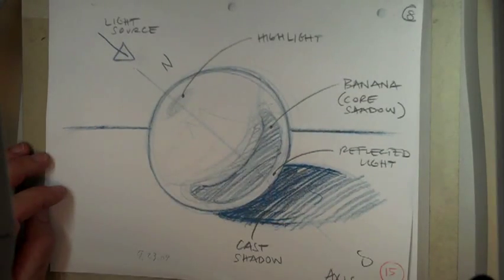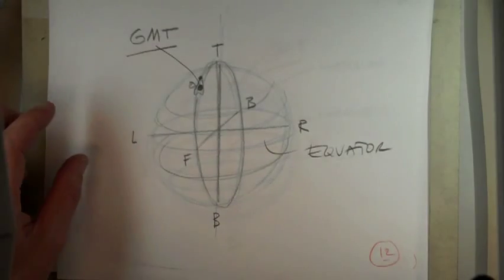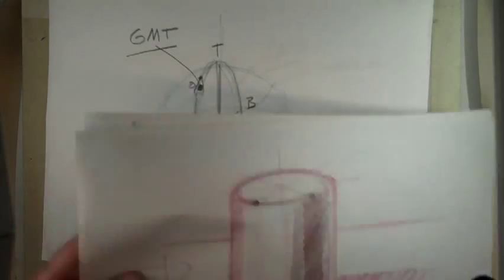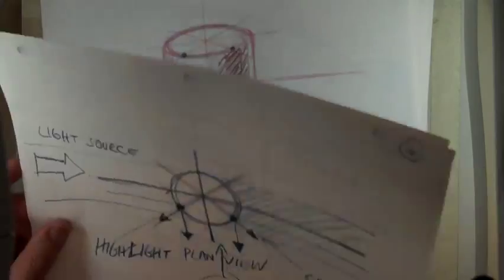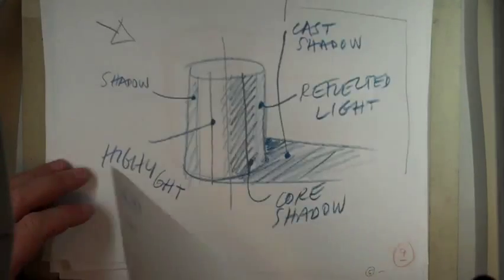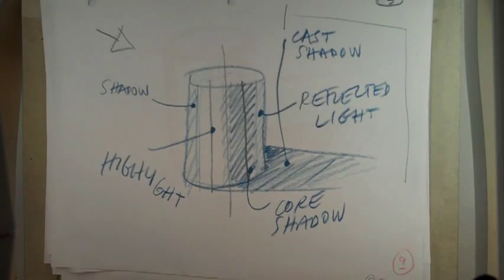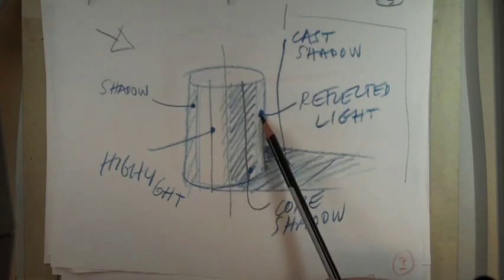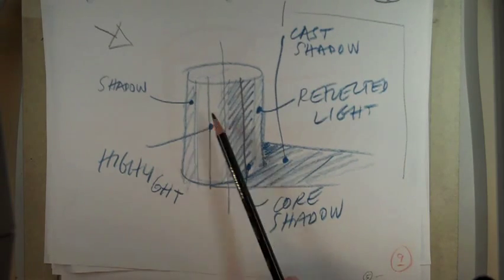So for the quiz, once again, the terms to remember are the ones in this little diagram: cast shadow, reflected light, core shadow, highlight, and shadow.